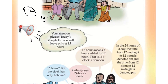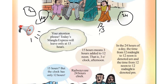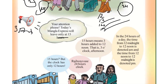We use a 24-hour clock at the railway station. 15 hours means 3 hours added to 12 noon — that is, 3 o'clock in the afternoon. Railway stations use a 24-hour clock.